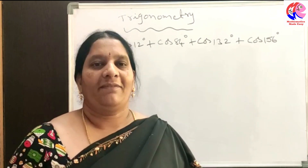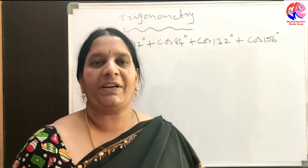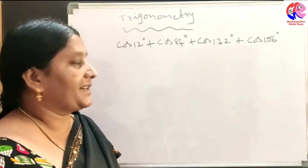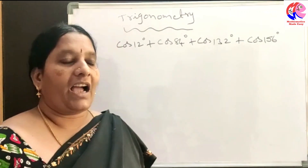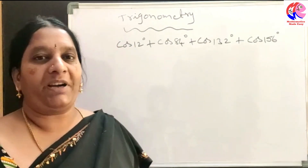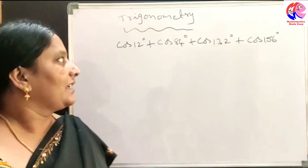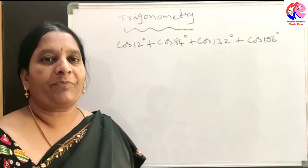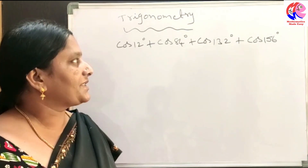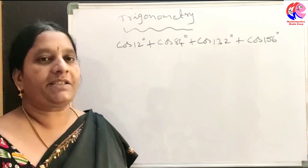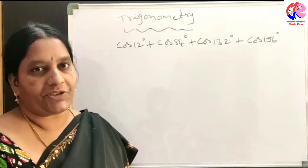Hello everybody, welcome back to another session of Mathematics Made Easy. Now our topic is trigonometry. I found a question in the APDSE question paper: cos 12 degrees plus cos 84 degrees plus cos 132 degrees plus cos 156 degrees.